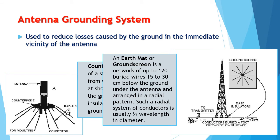Next, we have an earth mat or ground screen. It is a network of up to 120 buried wires, 15 to 30 centimeters below the ground under the antenna, arranged in a radial pattern. Such a radial system of conductors is usually one-half wavelength in diameter.